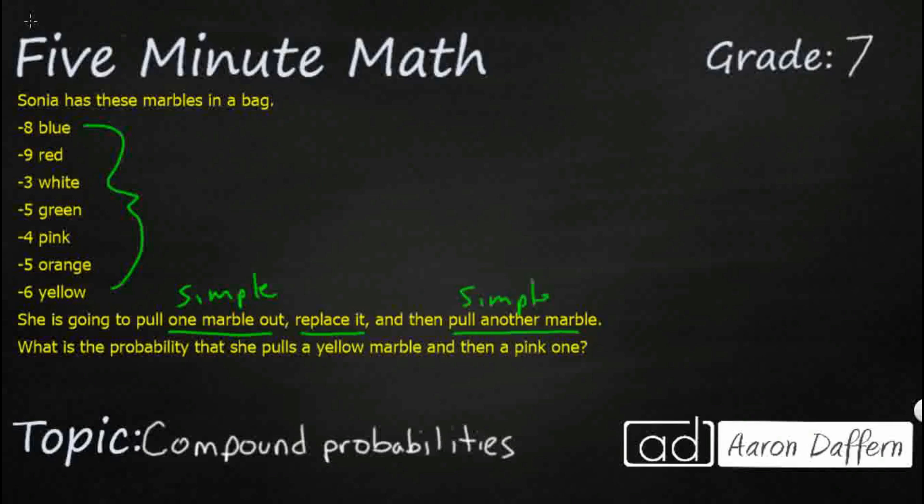So that is another simple event, but if you have two simple events together, that is what we call a compound event, or a compound probability is what we're looking for, because we don't just need to pull out a yellow. We need to pull out a yellow and then a pink, and it needs to be in that order. So, we need marble 1 to be yellow, and we need marble 2 to be pink.